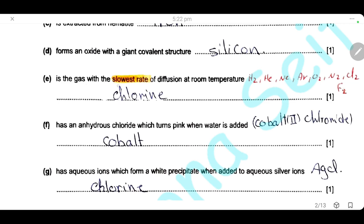Which gas has the slowest rate of diffusion at room temperature? The rate of diffusion is inversely proportional to molecular mass, so the gas with the slowest rate of diffusion has the highest molecular mass. Here we have gases from the first 30 elements. Helium, neon, and argon are noble gases and monoatomic, but all other gases are diatomic, so multiply their atomic mass by 2. The gas with the highest molecular mass is chlorine: 35.5 × 2 = 71, so chlorine has the slowest rate of diffusion.